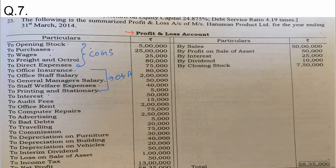Interest — we don't take under operating expenses. After taking all the operating expenses, we deduct interest from EBIT. We have to deduct this interest from earnings before interest and tax. The profit which we get from that we will be taking separately under EBIT.